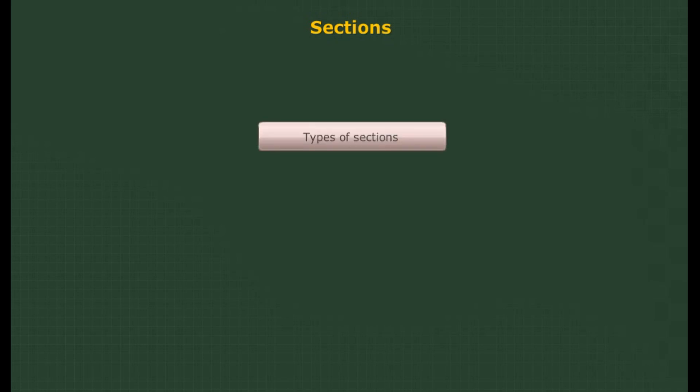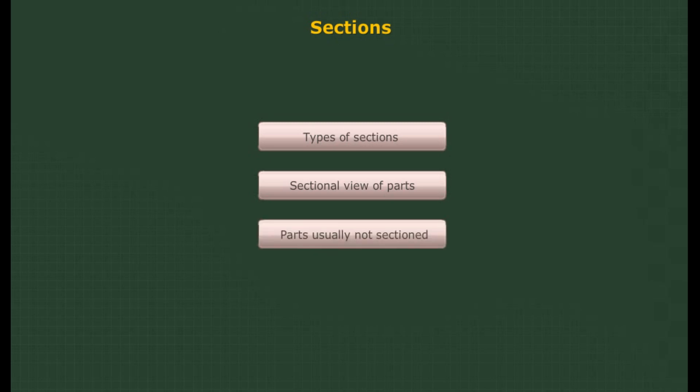This chapter will deal with sectioning of machine parts, covering types of sections, sectional views of parts, and parts usually not sectioned.